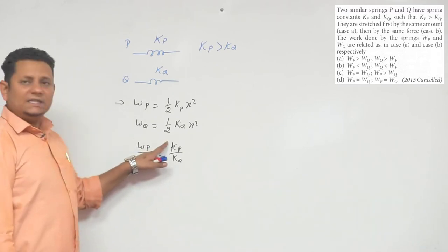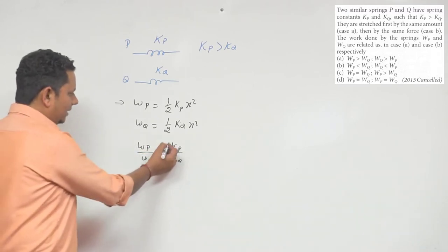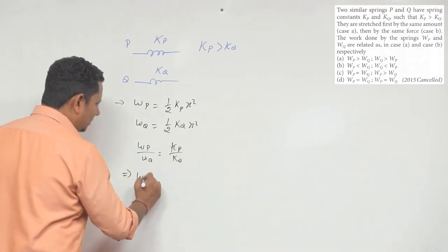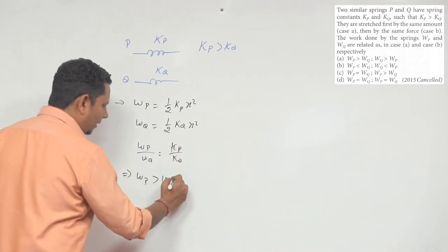Now because Kp is greater, the ratio Kp by Kq will be greater than one, so this implies WP will be greater than WQ.